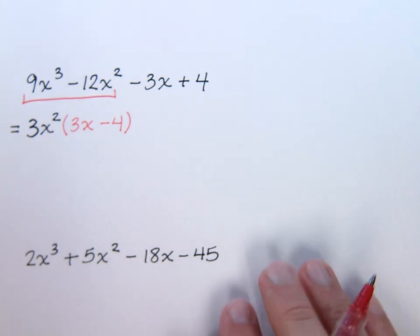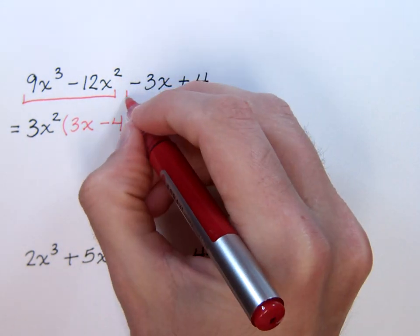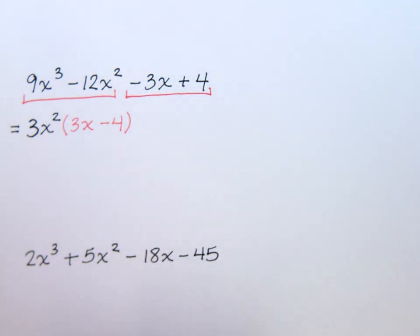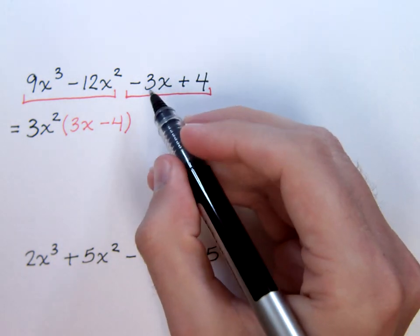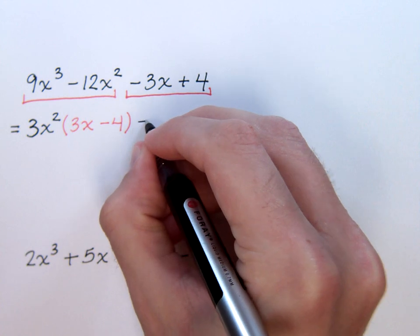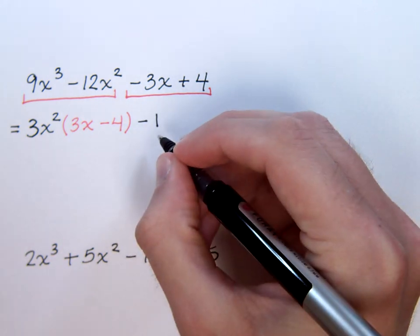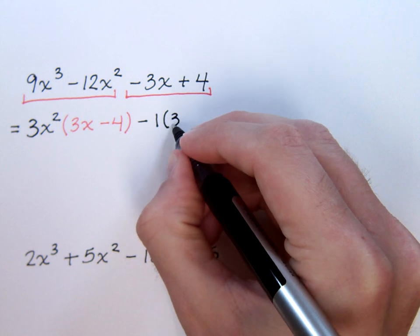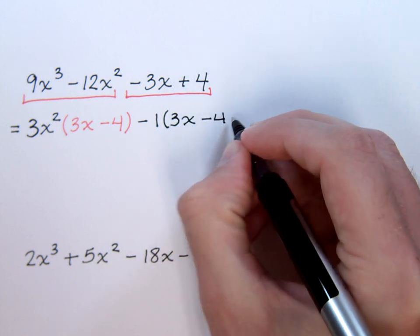Let's take a look at the second group here. The second group leads off with a negative. So, if it leads off with a negative, we know that we need to factor out a negative along with a common factor. These guys don't have anything in common, so we're just going to take out a minus one here. I'm going to take out that negative one. It's going to change the signs to make this three x minus four.